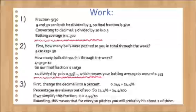And we just divide that. So 10 divided by 30 is 0.3 repeating, which means that your batting average is around 0.333.